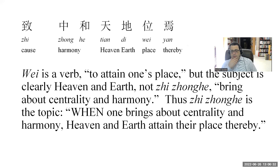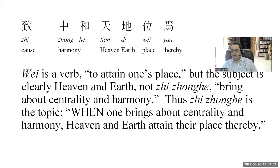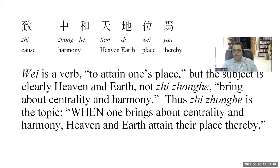One more example — a very famous sentence: Zhu zhonghe, tiandi wei. 'Wei' is a verb meaning 'to attain one's place,' but the subject is heaven and earth. It's not 'zhu zhonghe,' which means 'to bring about centrality and harmony' — that's the topic. 'When one brings about centrality and harmony, heaven and earth attain their place thereby.' It's a remarkable philosophical statement: the people bringing about centrality and harmony are humans. In most philosophies, heaven and earth already have their place and we have to figure out how to fit in. This is saying the relationship is more mutual — our action of bringing about centrality and harmony helps heaven and earth attain their place.